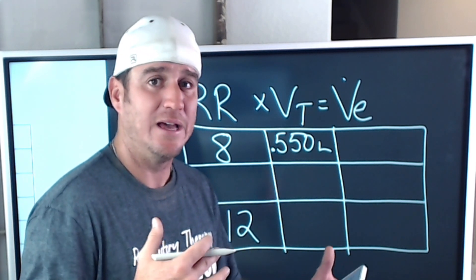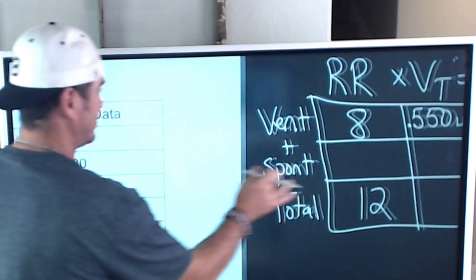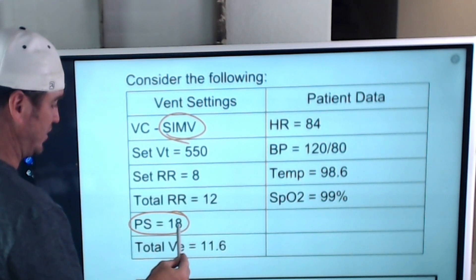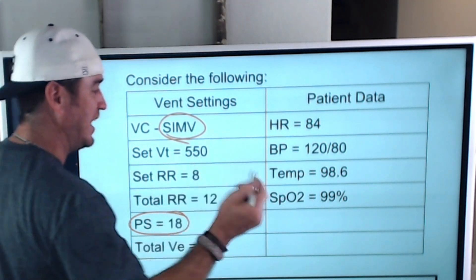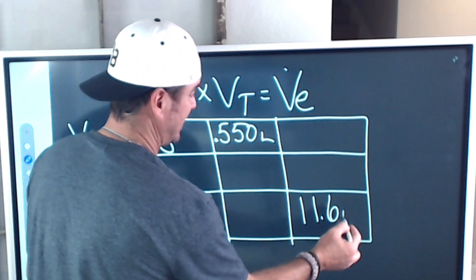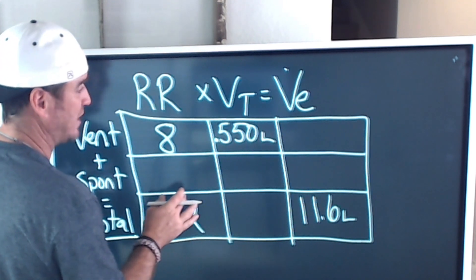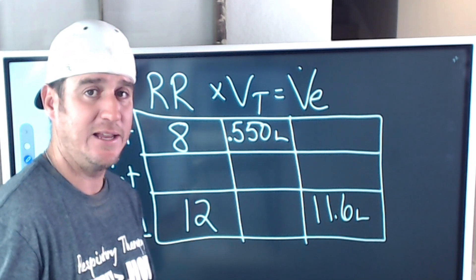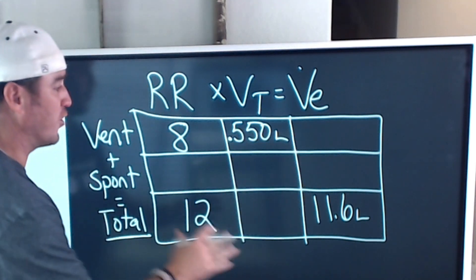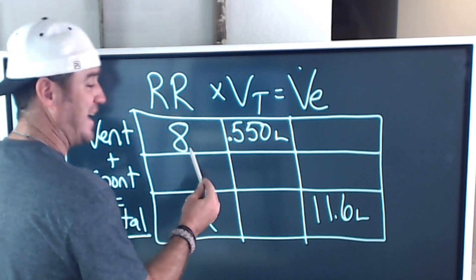For minute ventilation: our total is 11.6 liters per minute — that's what the scenario told us. Now we fill in the blank squares. I call this 'respiratory therapy sudoku.' If the total rate is 12 and the ventilator is providing 8 of those, then the patient must be making up the other 4 spontaneous breaths.